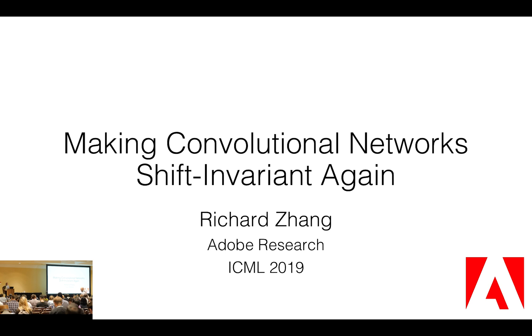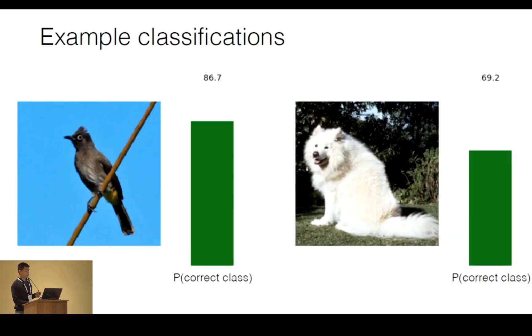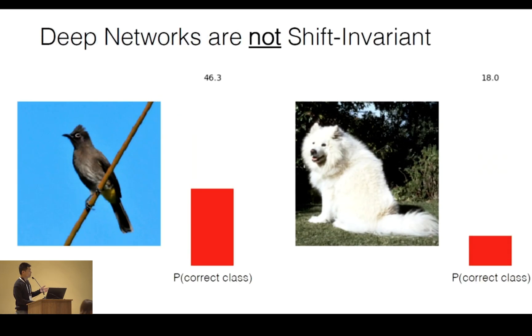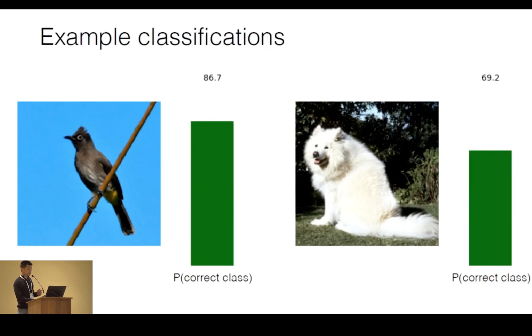Making convolutional networks shift invariant again, Richard Zhang. Thank you. These two images are classified correctly. These two are not. The only difference between these is a seemingly innocuous shift.